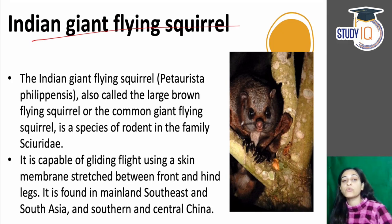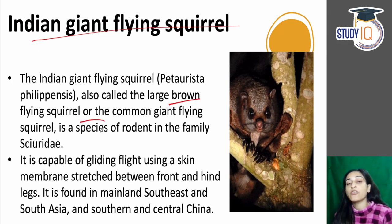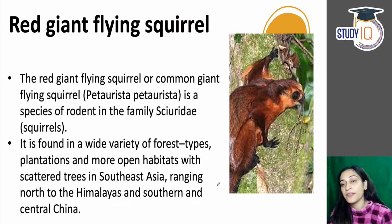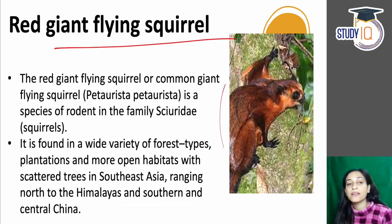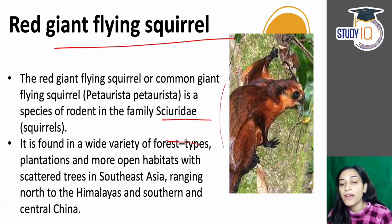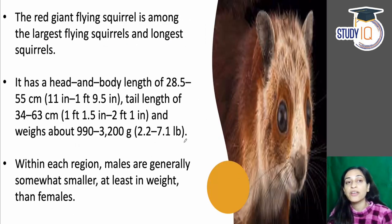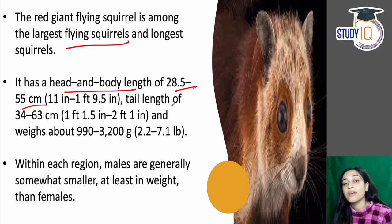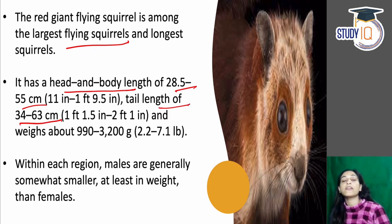The Indian Giant Flying Squirrel is also called the Large Brown Flying Squirrel or Common Giant Flying Squirrel. It belongs to the family Sciuridae and uses its skin membrane for gliding. It is found in mainland South East Asia, South Asia, and Southern and Central China. It is one of the largest squirrels, with head and body length of 28.5 to 55 cm, tail length of 34 to 63 cm, and weight of 990 to 3,200 grams.